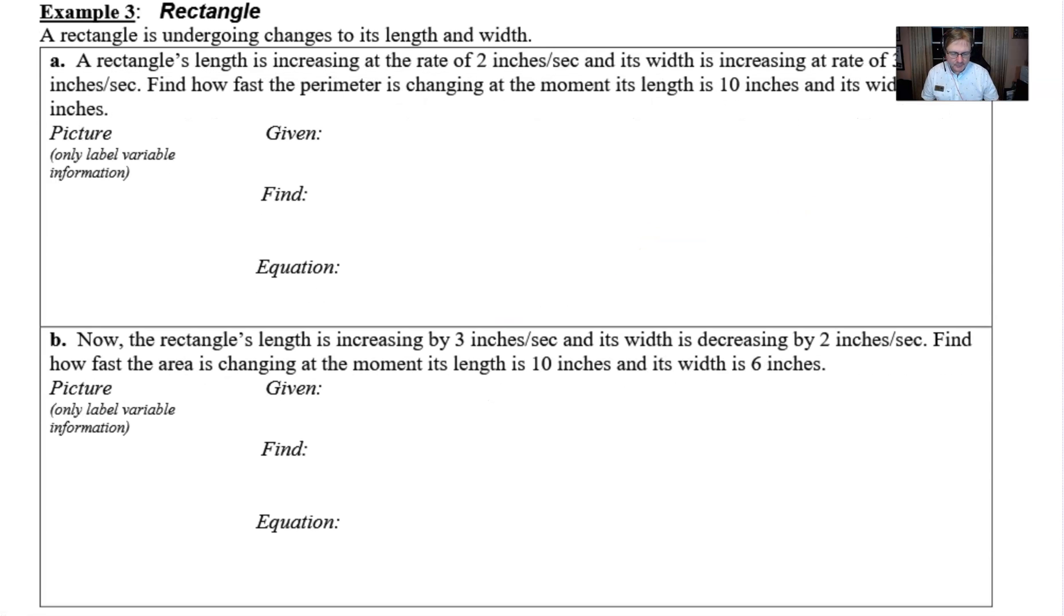So our example three from my notes at Avon High School looks a little something like this. A rectangle is undergoing changes to its length and width. A rectangle's length is increasing at the rate of two inches per second and its width is increasing at a rate of three inches per second. How fast, find how fast the perimeter is changing at the moment its length is 10 and its width is 6.